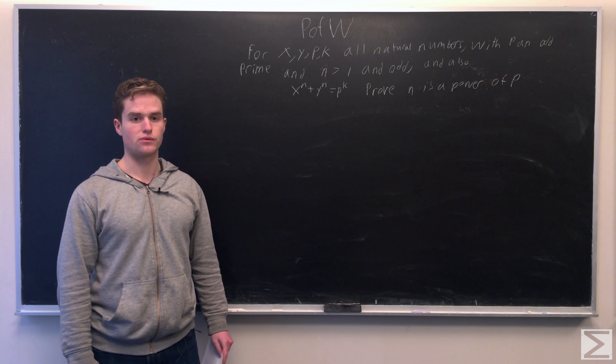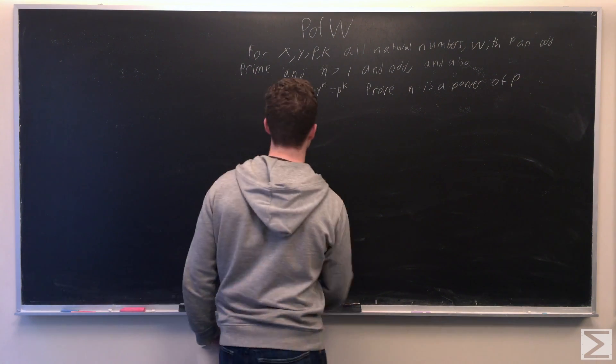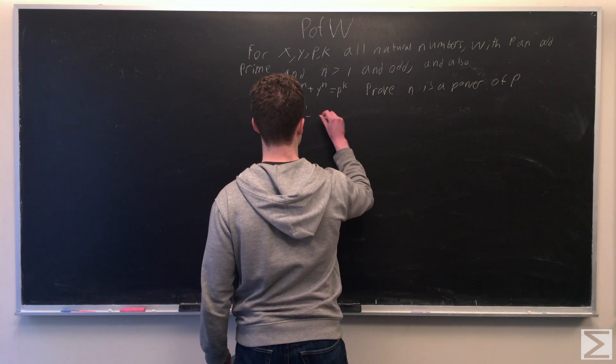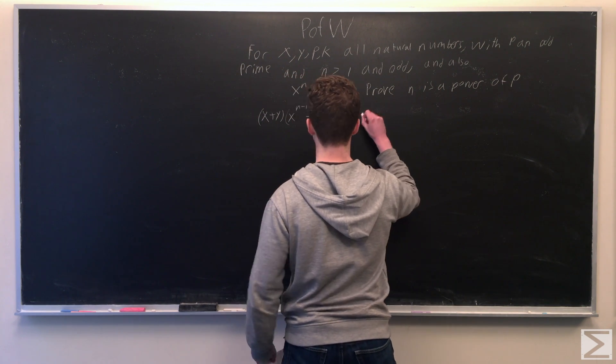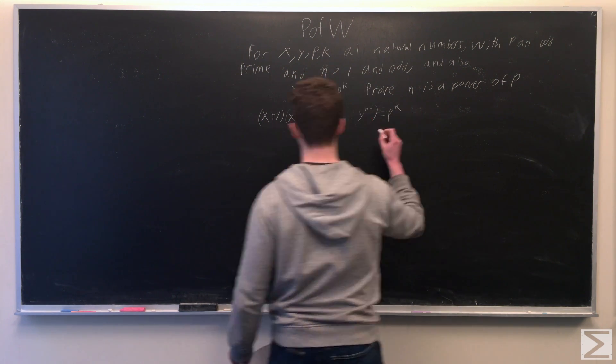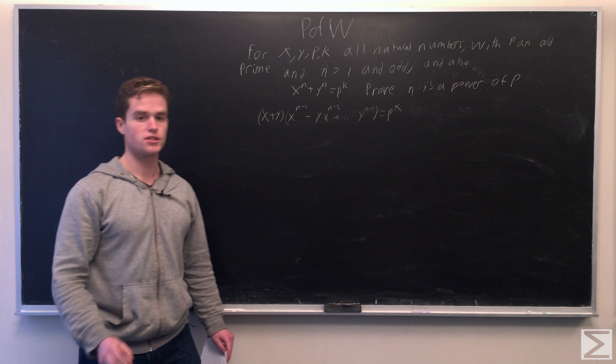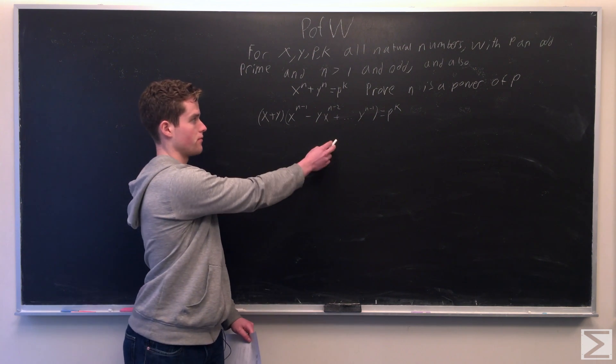So the first thing we're going to do is factor the left side. So because n is odd, we can factor like this.